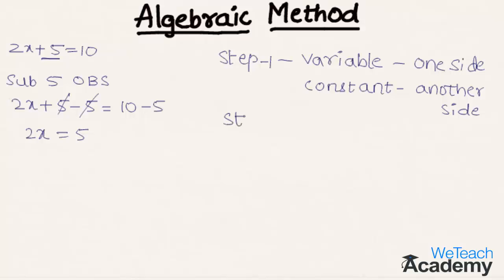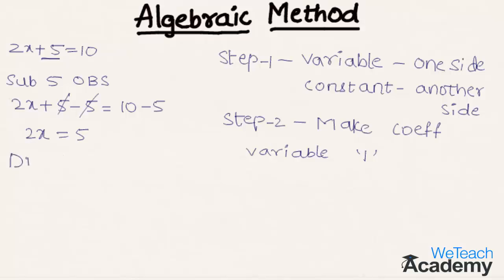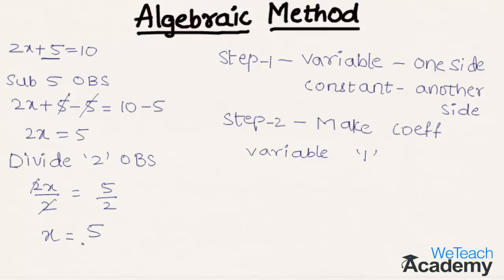The next step is to make the coefficient of the variable equal to 1. To make the coefficient of x equal to 1, let us divide the equation by 2 on both sides. By dividing, we get 2x divided by 2 equal to 5 divided by 2. On the left hand side, 2 and 2 get cancelled, and we get the value of x as 5 divided by 2.